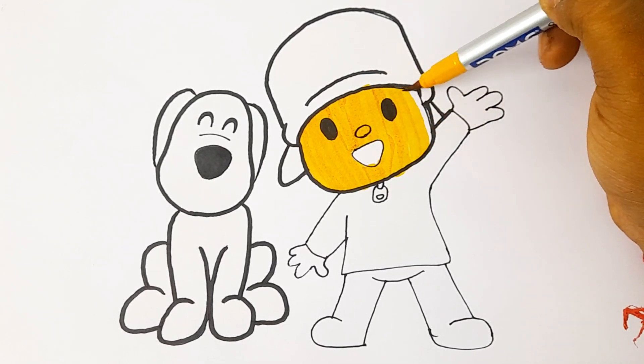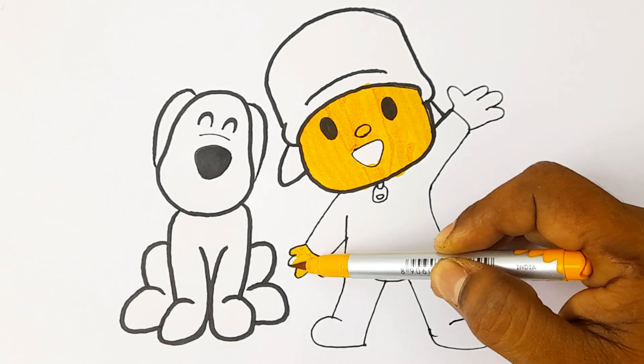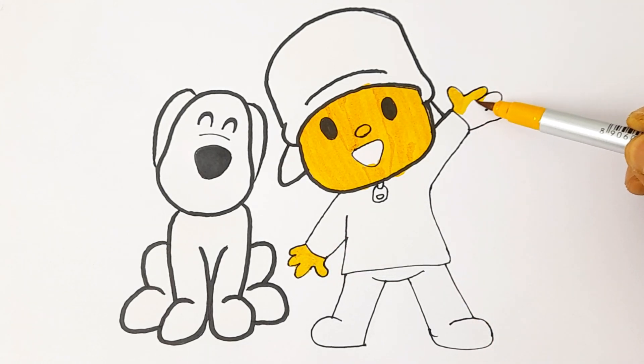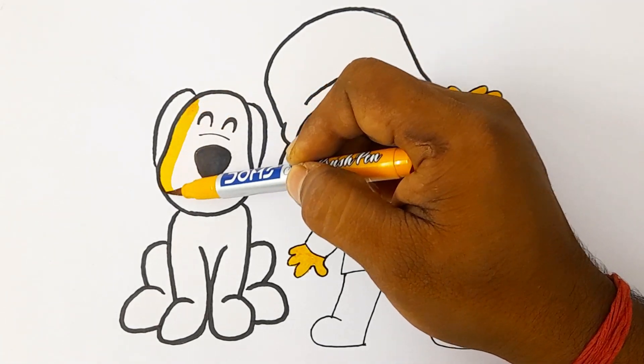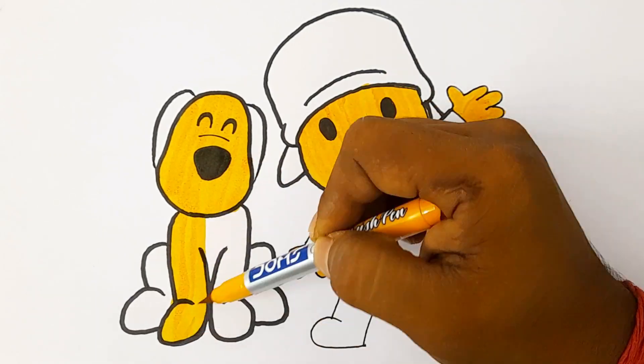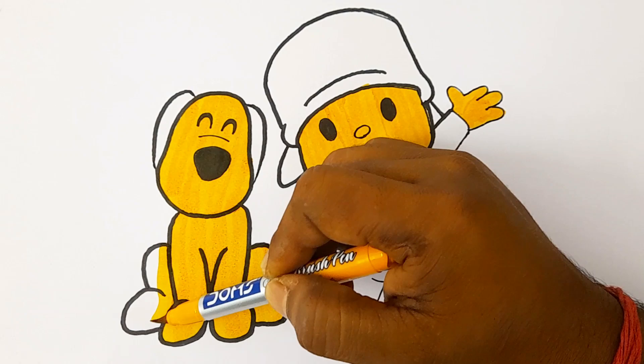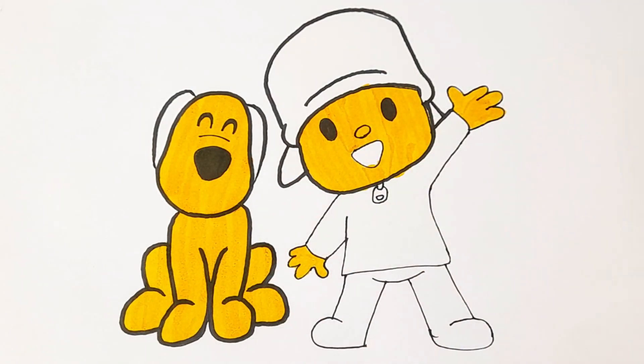Pocoyo skin color is dark yellow color. Which color, kids? Dark yellow color. Dark yellow color is also used for Lola Pocoyo. Wow! Yes, like that. It is too easy.